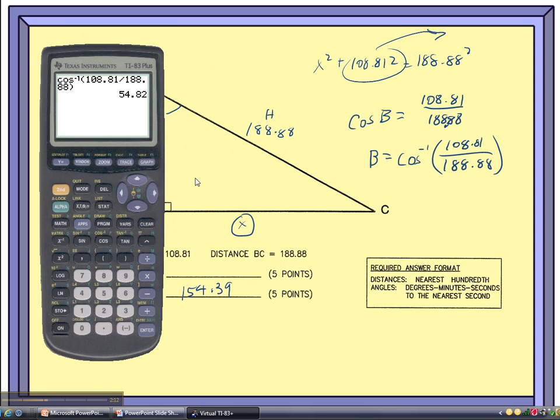So I get 54.82 degrees. And now, if I were to write that in this blank right here, even though I did this calculation correctly, I just missed the question. If I look in the box, it says angle measurements need to be measured in degrees, minutes, seconds, rounded to the nearest second.